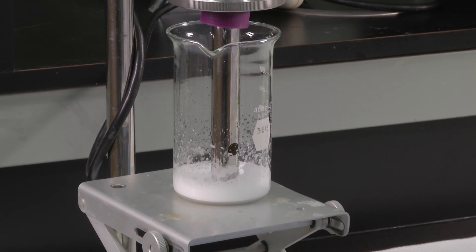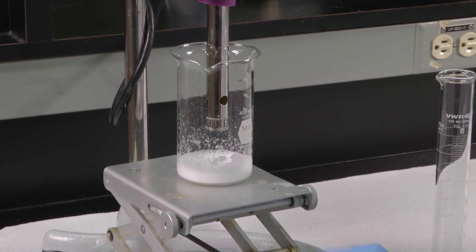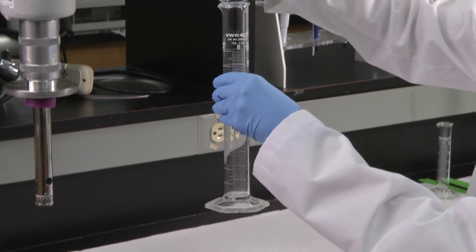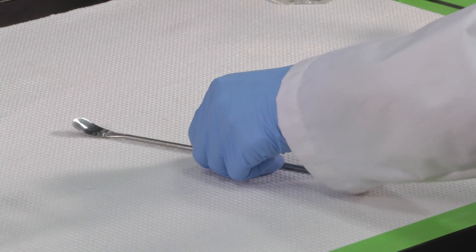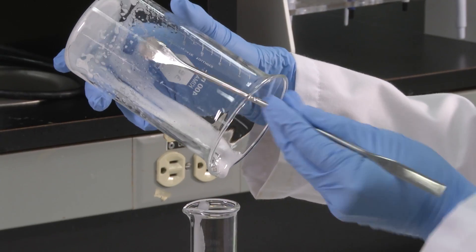After homogenization is complete, transfer the foam to a graduated cylinder. You may need to use a spatula to remove any remaining foam from the beaker.